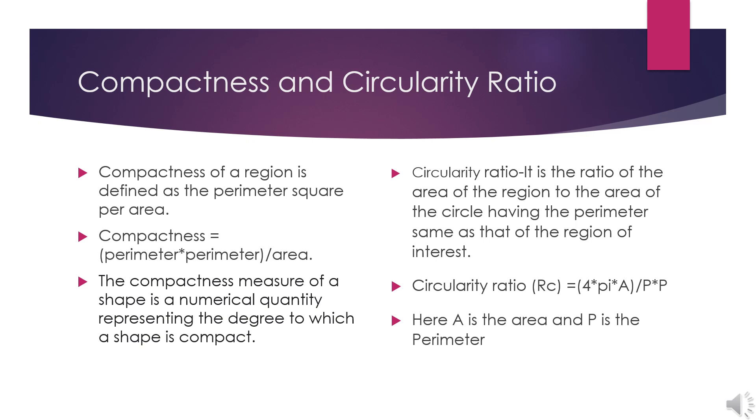Circularity ratio is the ratio of the area to the area of the circle having the perimeter same as that of the region of interest. Circularity ratio RC is given by 4πA by P squared, where A is the area and P is the perimeter.